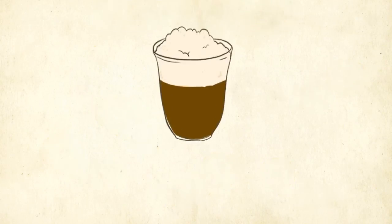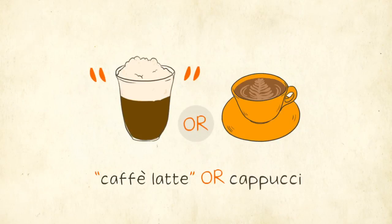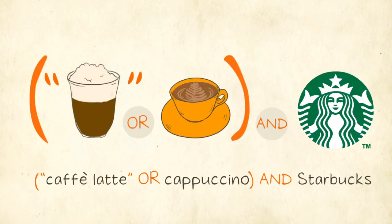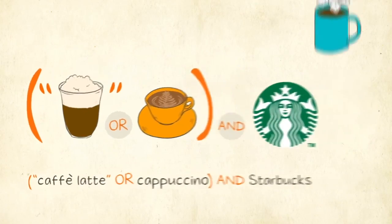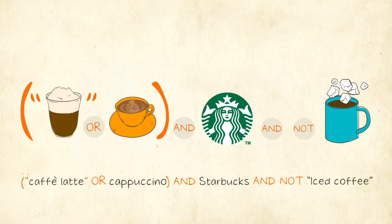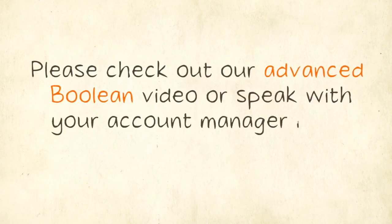To review, when using Boolean queries: always enter phrases in quotations; capitalize all operators; use OR to expand your search results; enclose any groupings in parentheses; use AND to narrow your search results; use NOT to exclude any words or phrases; and when entering exclusions, always add AND in front of NOT. On screen we now see our full Boolean query. After you've mastered these concepts, please check out our advanced Boolean video or speak with your account manager if you have any questions.